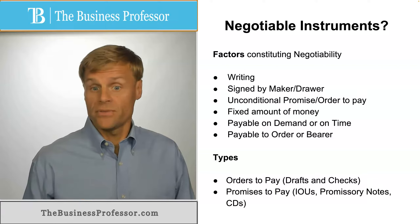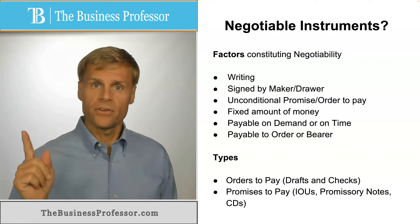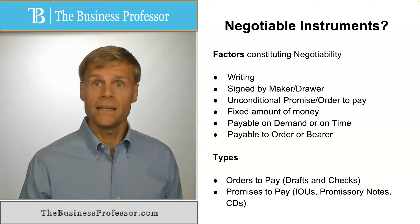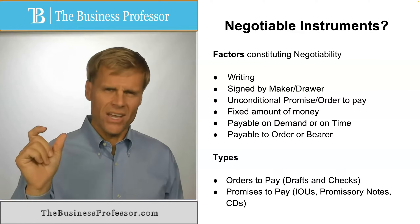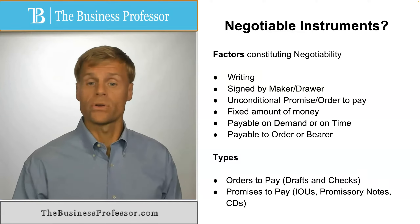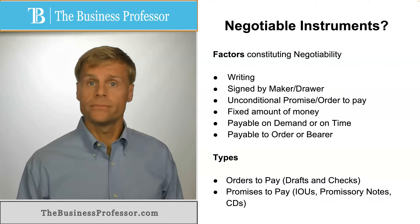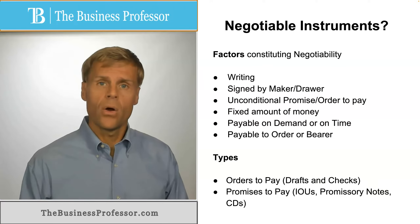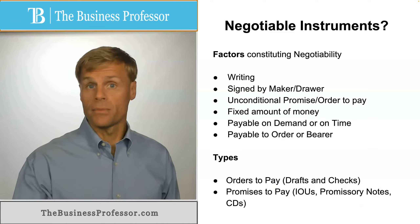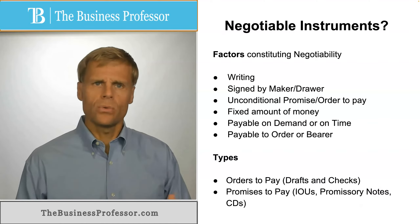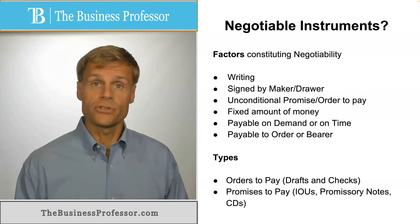There are numerous types of negotiable instrument. Some of the most common: an order to pay would be an example of a draft or a check — a check being a very specialized type of order to pay. Or a promise to pay, which is something like a promissory note, a certificate of deposit, or any form of IOU, could also be a promise to pay. All of these fall within the categories of different types of negotiable instrument.